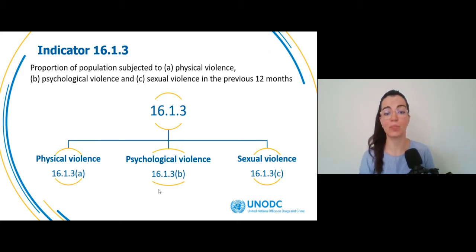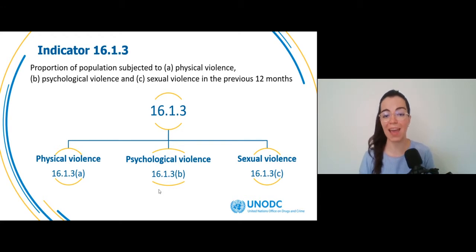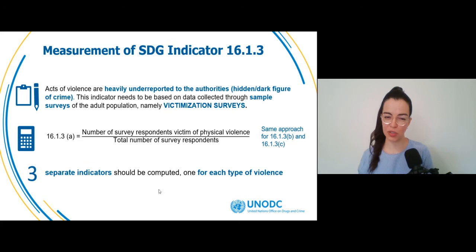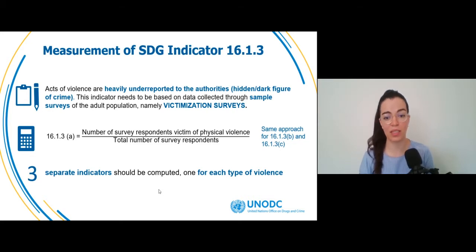Indicator 1613 is defined as the proportion of population subject to violence in the previous 12 months. To effectively measure progress towards reducing all forms of violence, the indicator is split into sub-indicators that will provide evidence on three different forms of violence: physical, psychological, and sexual. Since such experiences are heavily under-reported to the authorities, data from administrative police records are not suitable to provide reliable and comparable data. Thus, Indicator 1613 should be based on data collected through sample surveys of the adult population, commonly known as Crime Victimization Surveys, or CVSs.